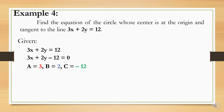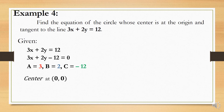Now, identify the values of A, B, and C. A is the coefficient of x, which is 3. B is the coefficient of y, which is 2. And the constant C is negative 12. The center of the circle is at the origin with coordinates 0 and 0. Therefore, x sub 1 is equal to 0 and y sub 1 is equal to 0.